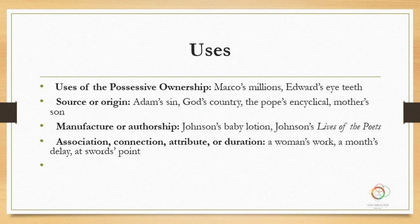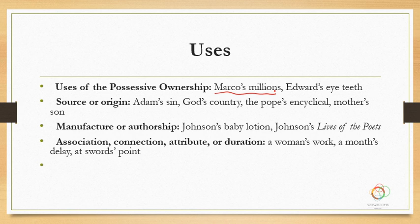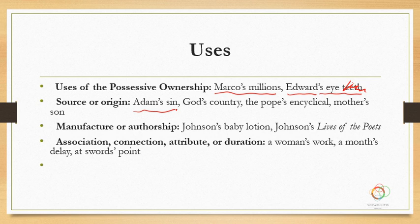Let's look at some uses. When do we use that? Number one: ownership — to show that Marco owns the millions, or Edward owns his eyes. Another use is source or origin, as in Adam's sin. It's not necessarily that Adam has that sin, but the source of something — where that sin came from. Other examples: God's country, the Pope's encyclical, and so on.